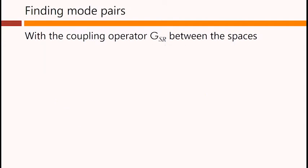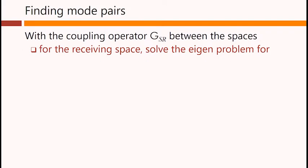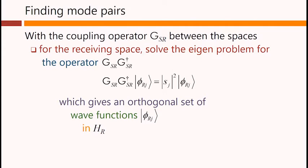With the coupling operator GSr between the spaces, for the receiving space, we solve the different eigenproblem for the operator GSr G dagger sr. So, we've swapped them around in order here. So, we solve that to get an orthogonal set of wave functions,